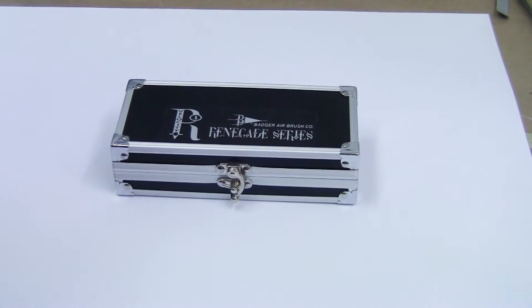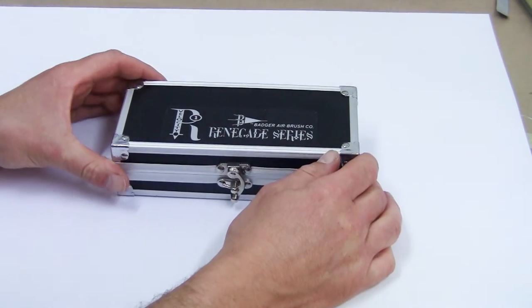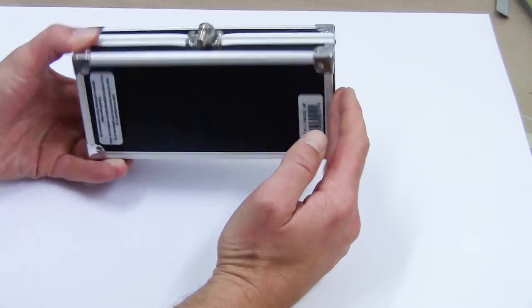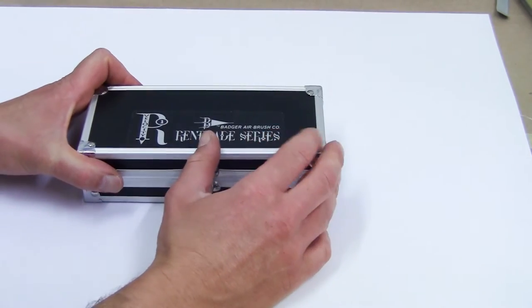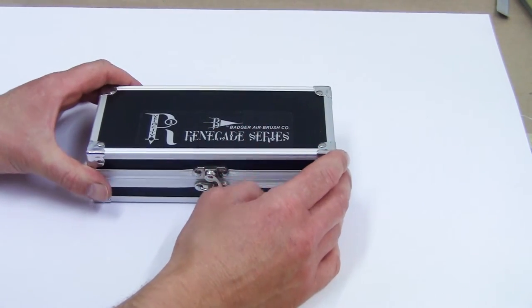The Renegade series comes in three different variations: the Velocity, the Spirit, and the Rage. In our test today comes the R1V, the Velocity. As you can see, it is very beautiful and well made.